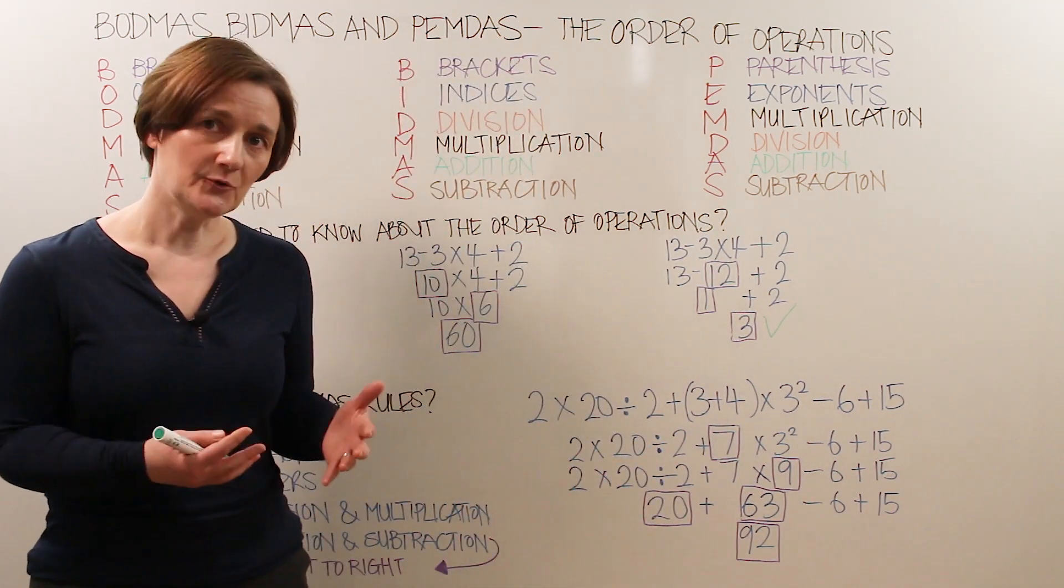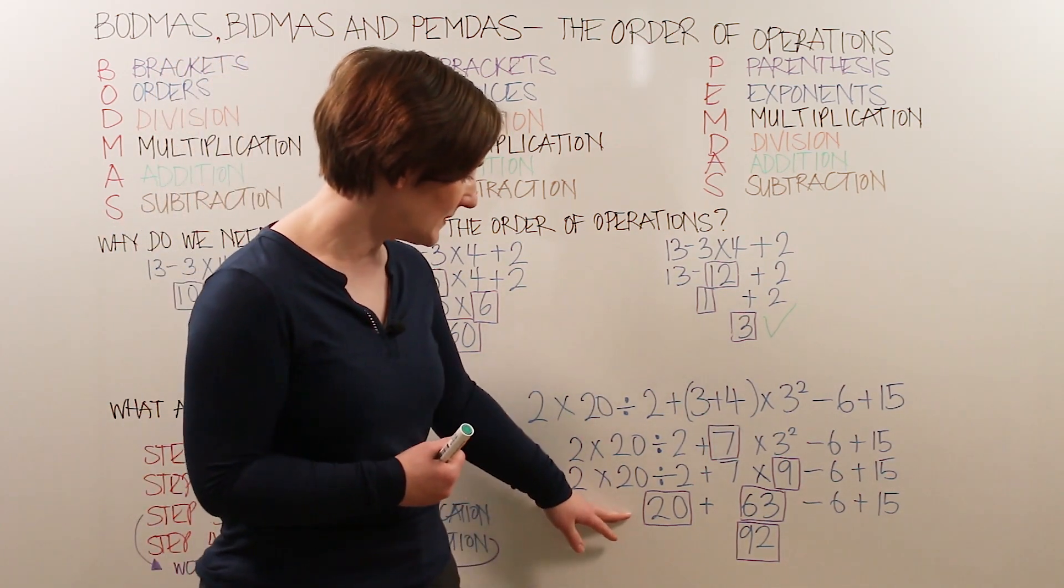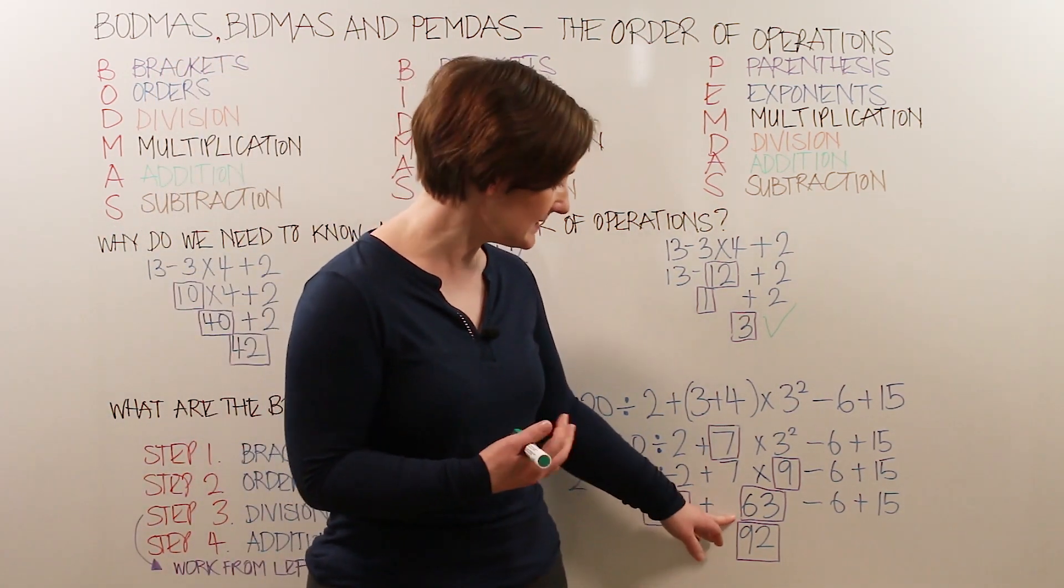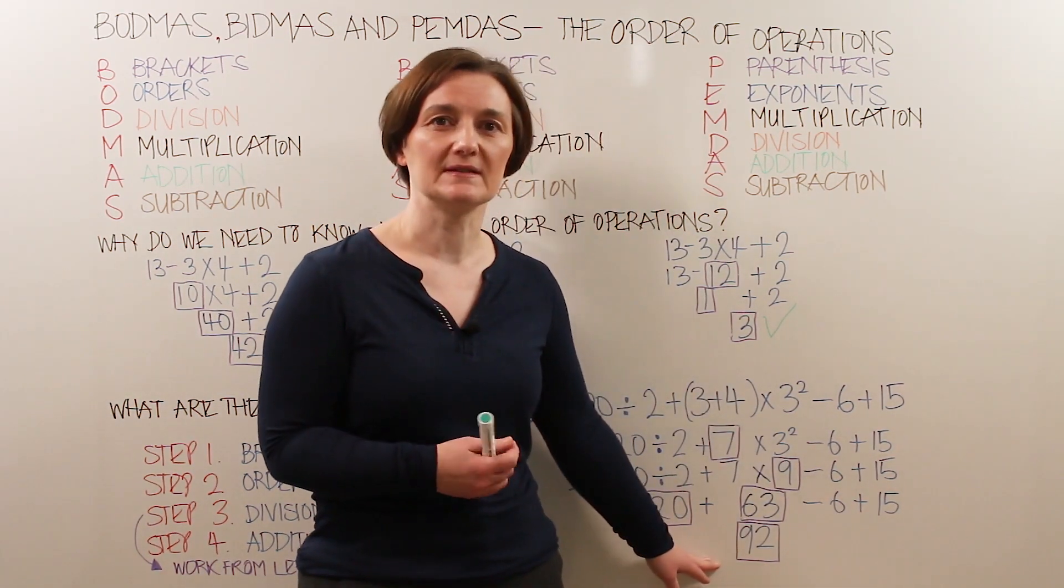So we can move to step 4, addition and subtraction. We need to work left to right. So we have 20, add the 63, it's 83, minus the 6, and add the 15, which gives us an answer of 92.